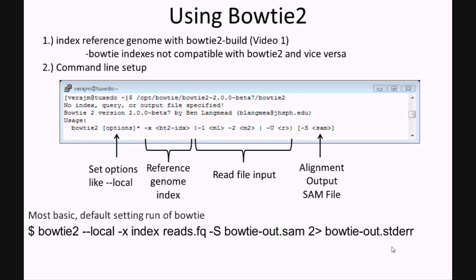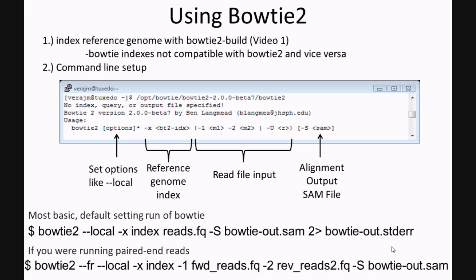If you were running paired-end or mate-paired reads, this is what the general setup of the command line would look like. In addition to using the -1 and -2 options to designate our separate read files, we also have to use an option to designate the orientation of our two read files. In the case of traditional paired-end, we would have one set of reads in a forward direction and the second set in the reverse complement orientation. If we were running mate-paired, they would be in the same orientation, so we would use a different option.